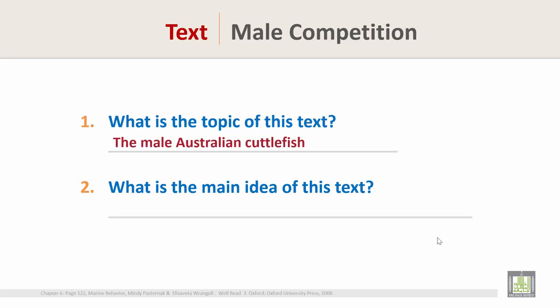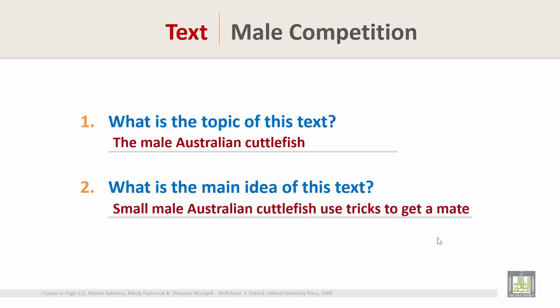The answer is: the male Australian cuttlefish. Question 2: what is the main idea of this text? The main idea is: small male Australian cuttlefish use tricks to get a mate. This is the end of this text, thank you.